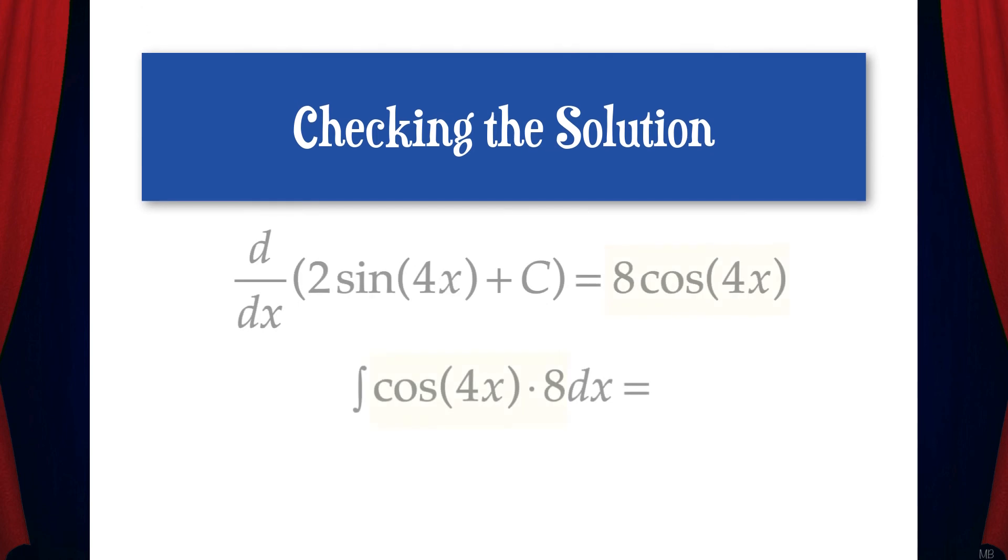Let's check the solution. If we take the derivative of 2 sine 4x plus c, we get 8 cosine 4x. And that's the original function that we were trying to integrate.